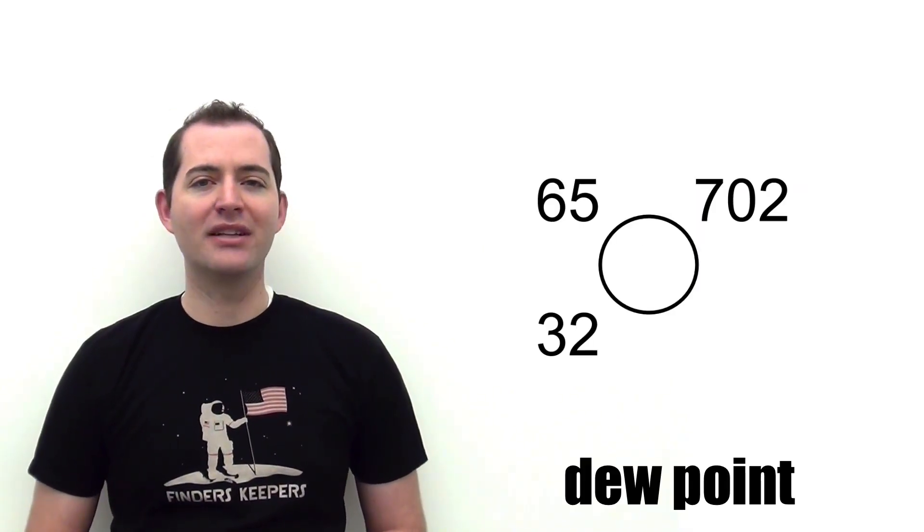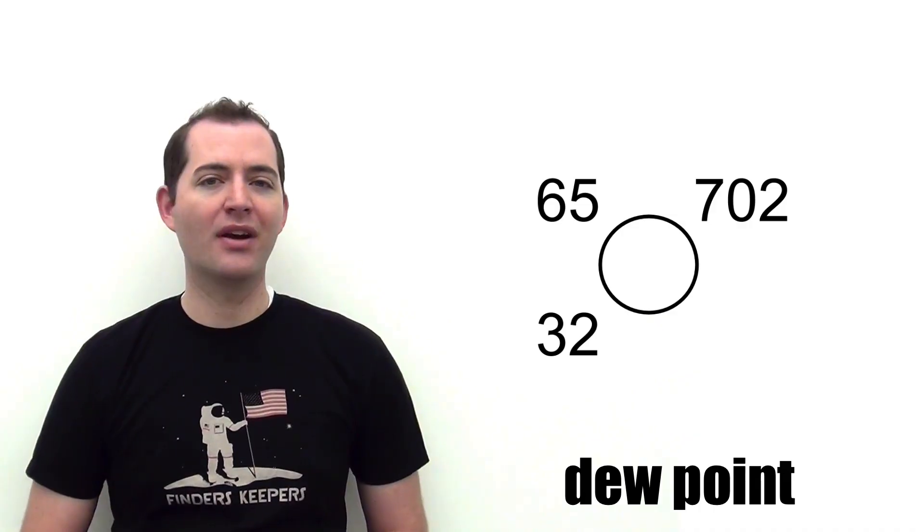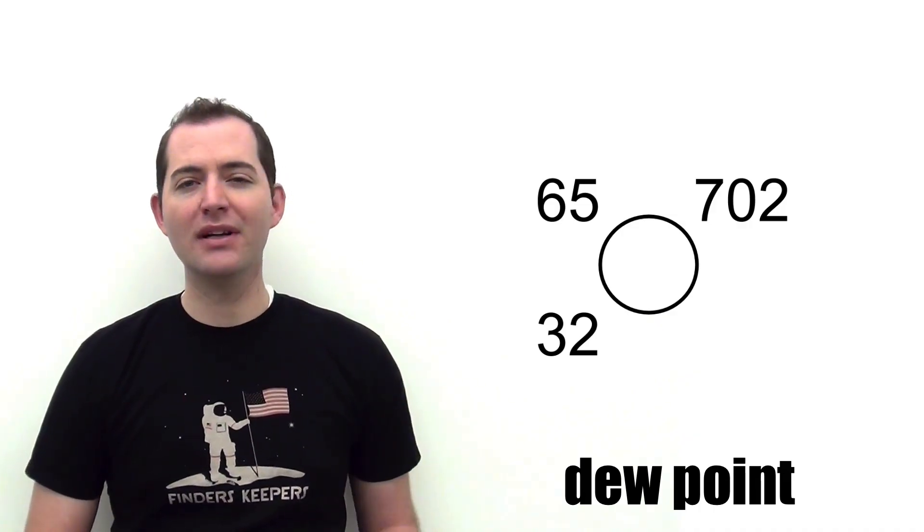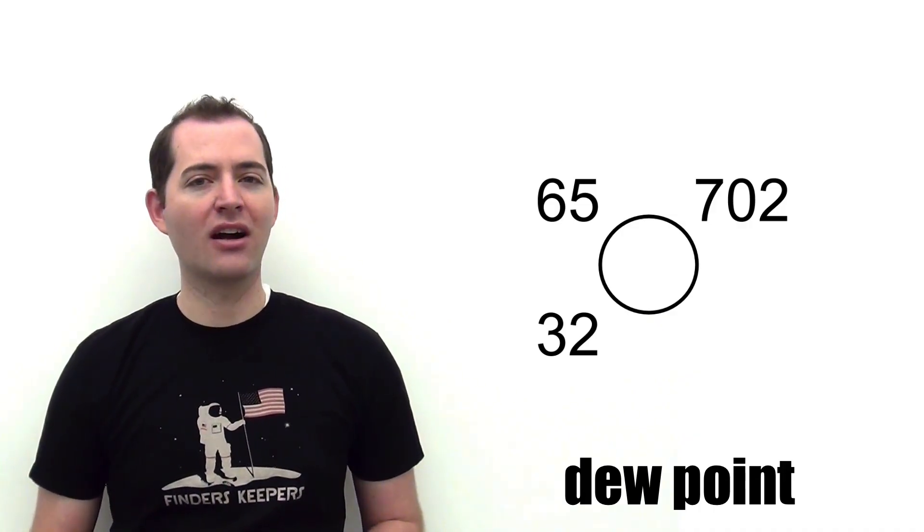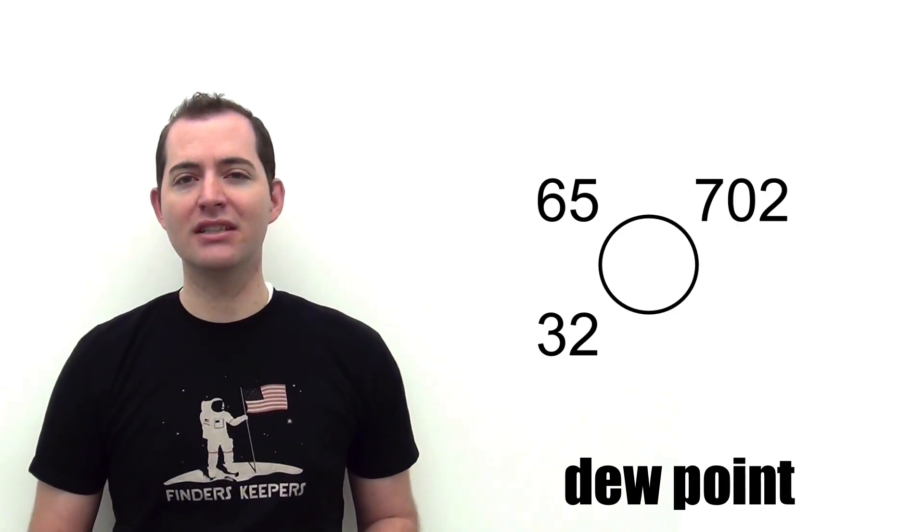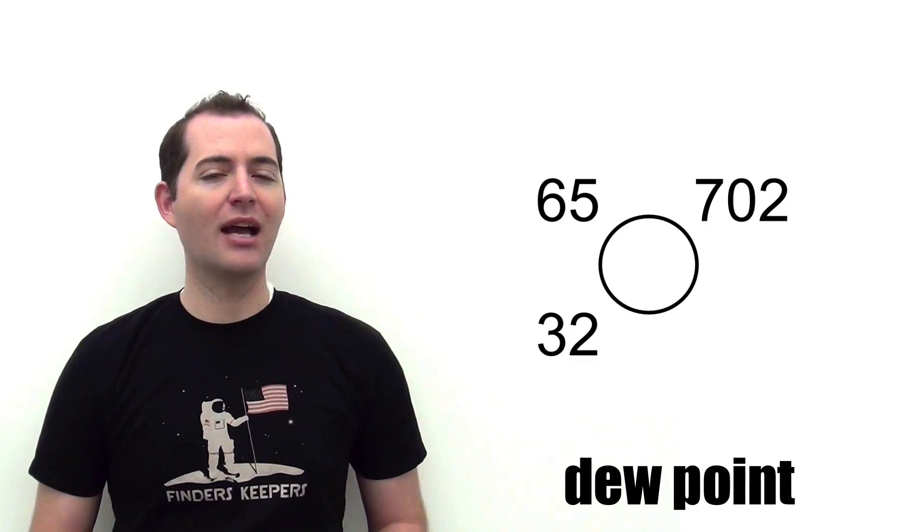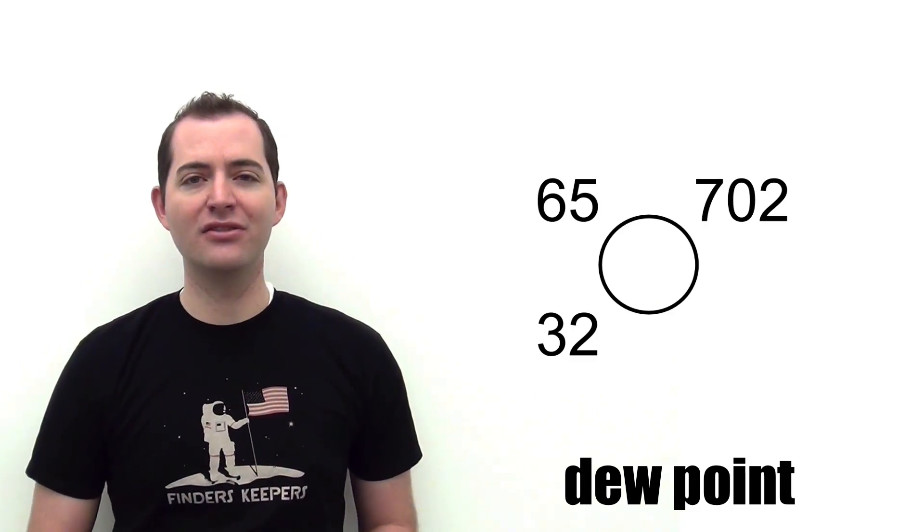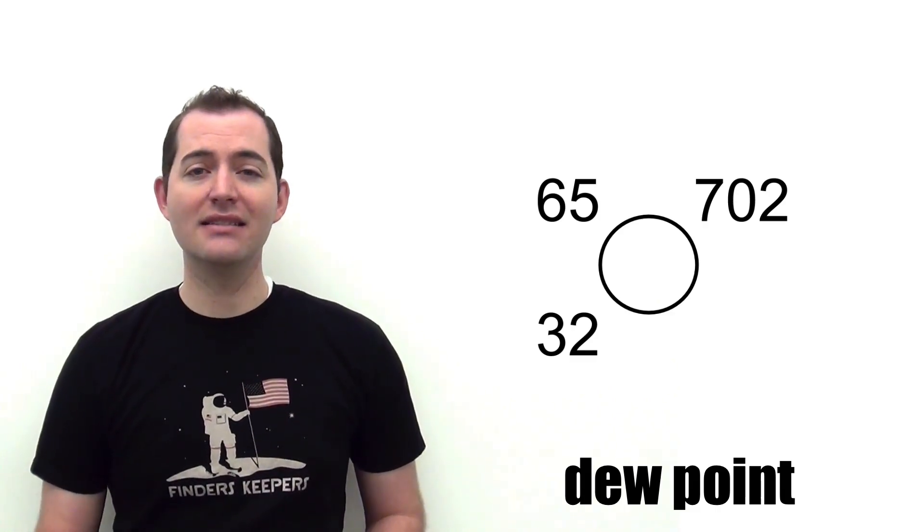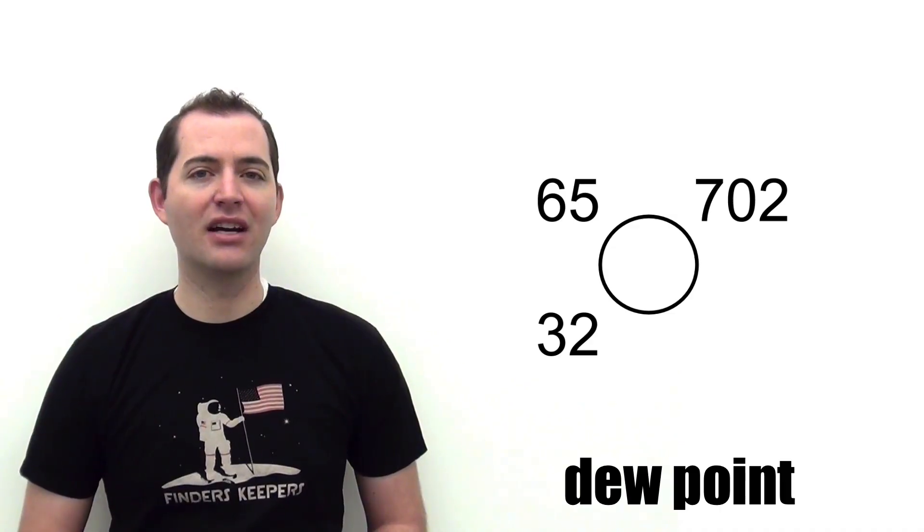Dewpoint is the temperature at which the relative humidity would be 100%. Both relative humidity and dewpoint are descriptions of how much moisture is in the air, and dewpoint is written as a temperature. For example, it could be written as 32 degrees Fahrenheit. This is the temperature at which dew would form under current weather conditions. Dewpoint is shown on a station model to the bottom left of the circle.